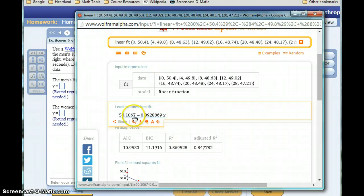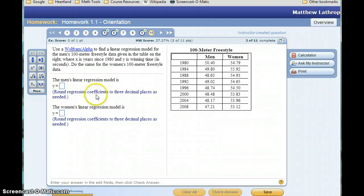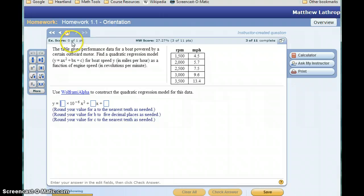All we would need to do is take this result, type it into our box. In this case, we're being told to round each of those to three decimal places. But essentially, we've got that result. You'll do the same thing for the data on women. And then in this last homework question, we're going to do something very similar, except instead you're going to be constructing a quadratic regression model.